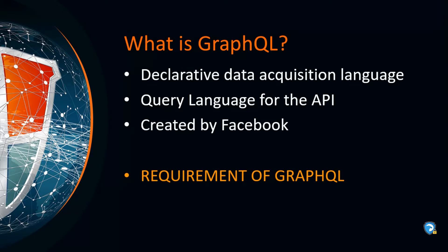First of all, what is GraphQL? GraphQL is generally known as a declarative data acquisition language. It is a query language for APIs used with a server-side runtime that uses a type-based system to execute queries. The type-based system is defined by your data. GraphQL is not tied to a specific database or storage engine but relies on your existing code and data.